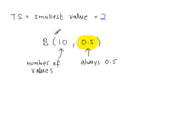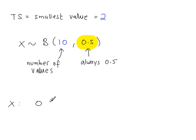So for this binomial distribution with 10 trials, x can take any value between 0 and 10. Some of these values are in the critical region, and that's what we have to look up next.